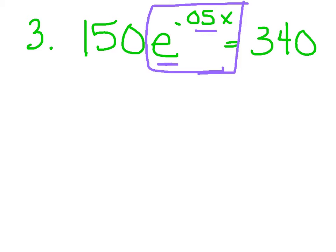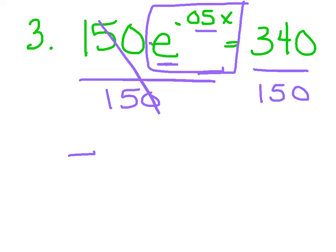So, step 1, to get that by itself, I need to boot this 150 over to the other side. To get rid of 150, I'm just going to divide each side by 150. So I've got E to the 0.05 x equals. Now, when I type this in, I get this ugly decimal, 2.26 repeating. If it does not terminate or does not end, you need to store.